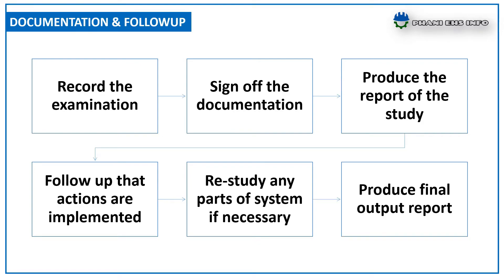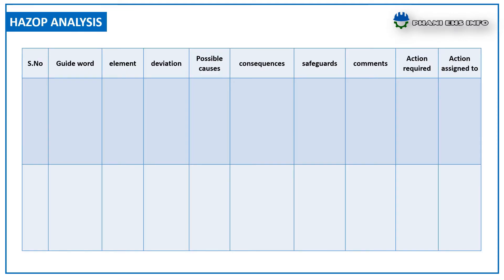The HAZOP analysis sheet contains sections assigning each entry a unique tracking number, a guide word, an element describing what the guide word pertains to, a deviation describing the deviation, possible causes describing how the deviation may occur, a consequence stating what may happen if the deviation occurs, safeguards listing the controls, comments capturing key relevant assumptions, action required identifying hazard mitigation or control actions, and actions assigned recording who is responsible.